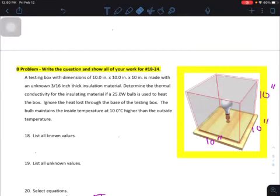All right, let's look at questions numbers 18 through 24. You'll notice that up on the top here it says this is a B problem. So if you want to get a B in the class, you need to be able to do a problem like this.